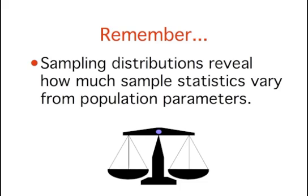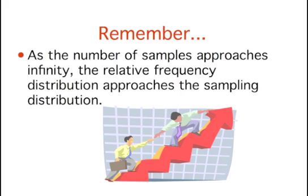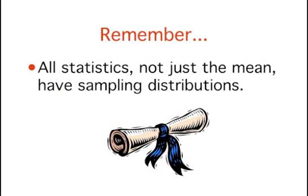To review, there are three primary ideas to remember from this section. First, sampling distributions help determine how sample statistics vary from population parameters and other sample statistics. Second, as the number of samples approaches infinity, the relative frequency distribution approaches the sampling distribution. And last, keep in mind that all statistics — not just the mean — have sampling distributions. In later sections, we'll be discussing the sampling distribution of the difference between means and the sampling distribution of Pearson's correlation, among others. We hope that you now have a sense of the concept of a sampling distribution and its potential uses.